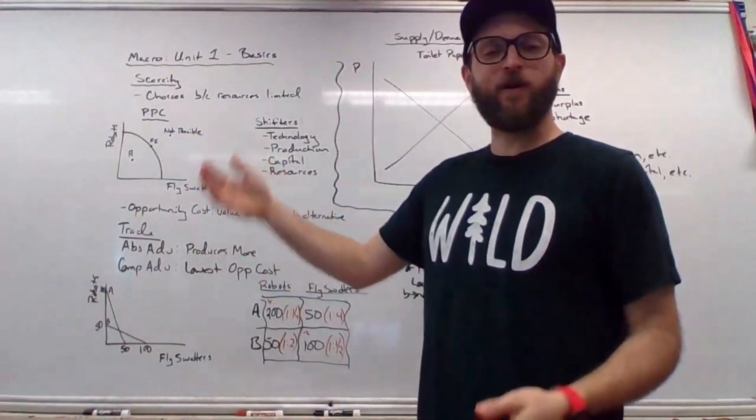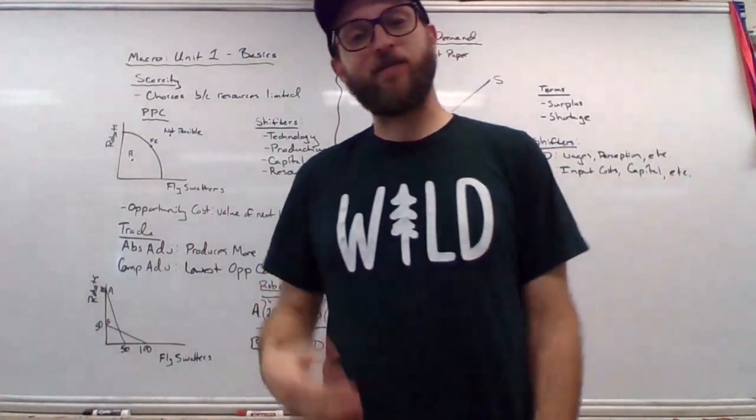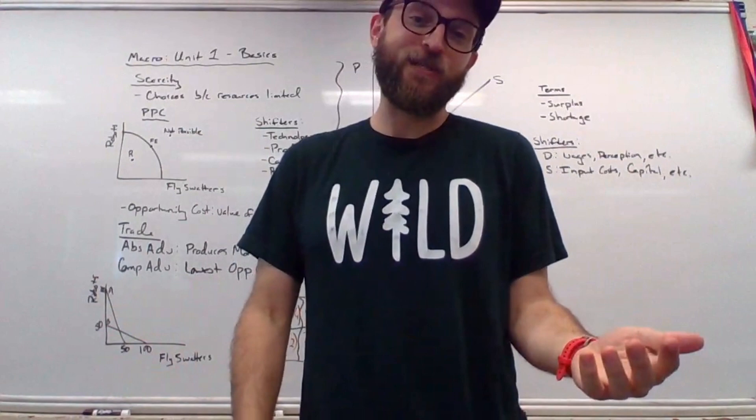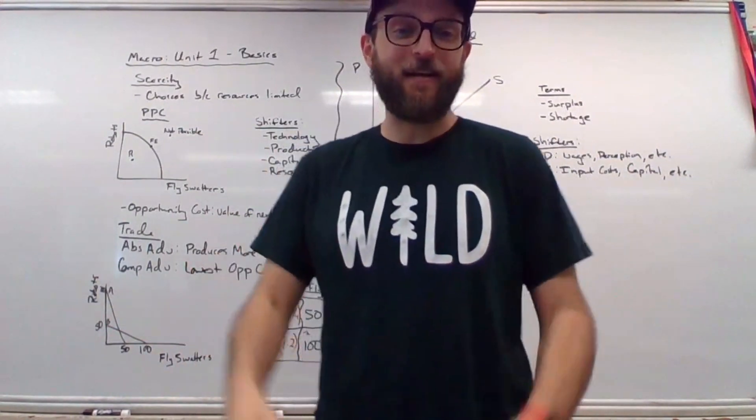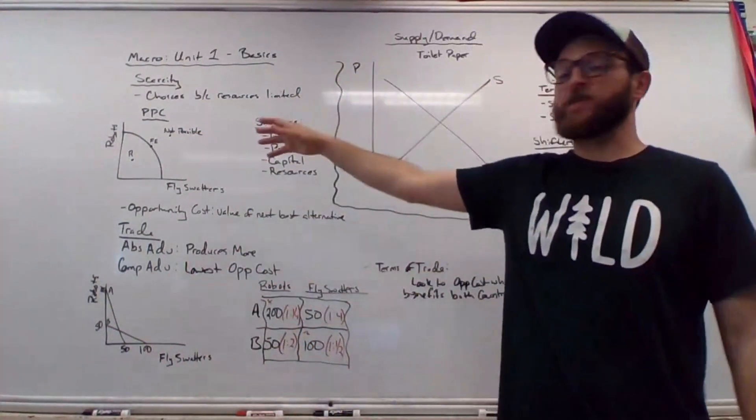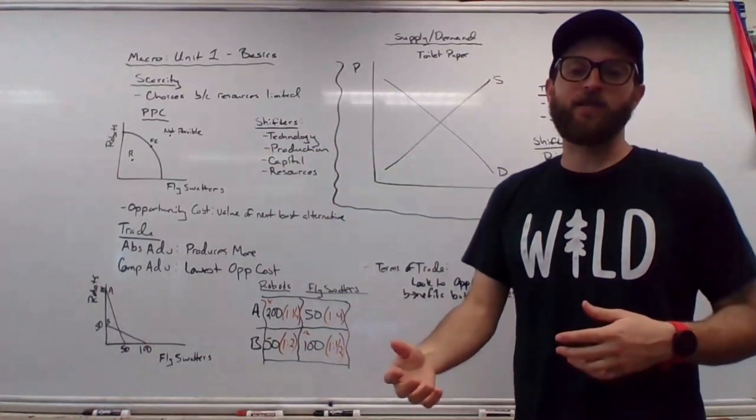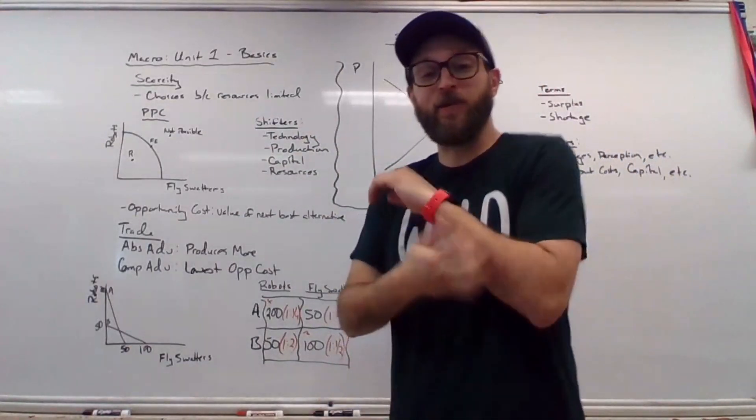We begin Unit 1 by looking at scarcity, the management of unlimited wants and needs, and scarce resources. We want it, but it isn't there. We're going to do this through the production possibilities curve, which is the relationship between two objects and our ability to produce them.